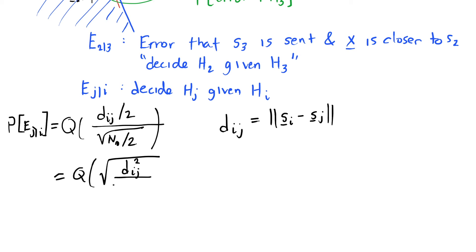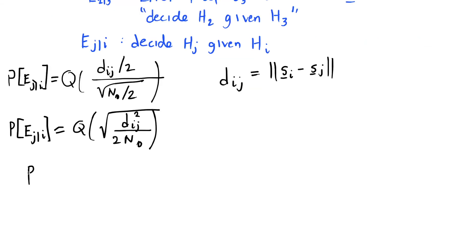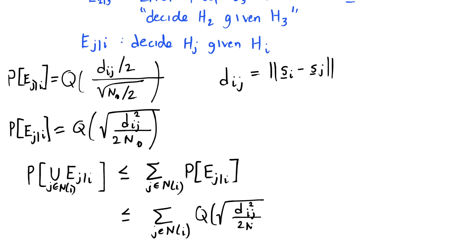The 4 on bottom, 2 on the top, makes a 2 on the bottom: 2n0. This becomes our primary probability of a single type of error. The union bound says that the union of all these error events, ej given i, for j in some set of neighbors, which I'll talk about in a second, is going to be less than or equal to the sum over the same indices j of the probability of those j given i error events, which we saw is this Q function.